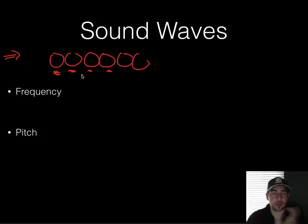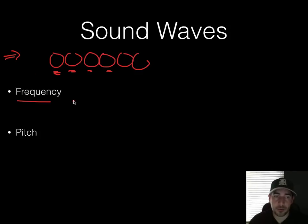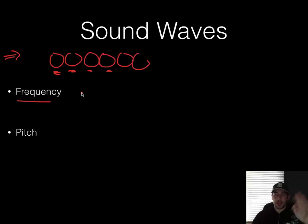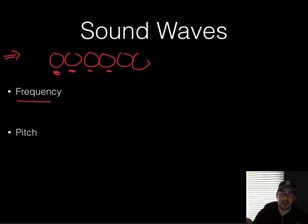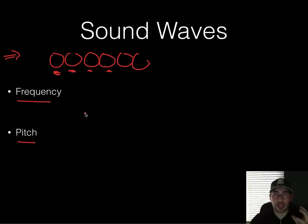Based on how much those molecules wiggle back and forth, that tells us the frequency. Frequency is how often the wave occurs over a given period of time. The faster the sound wave comes in, the more frequently it hits — like ripples on a sheet, counting how many pass a finish line per second. Pitch is a tone's highness or lowness, and it's based on this frequency.